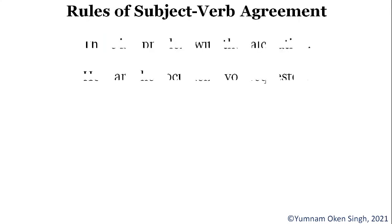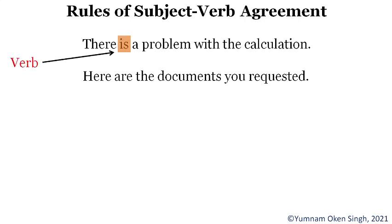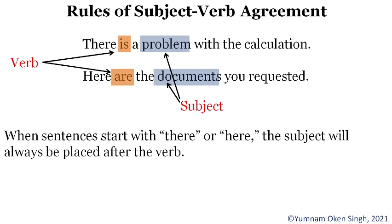Now let's look at: 'There is a problem with the calculation' and 'There are documents on the table.' In these sentences the verb comes before the subject. In the first sentence 'is' is the verb and 'problem' is the singular subject. In the second, 'are' is the verb and 'documents' is the plural subject. In sentences that begin with 'there,' the subject comes after the verb. This is Rule Number Three.